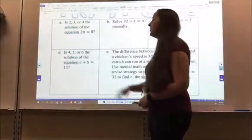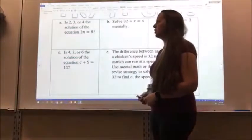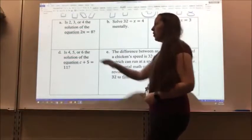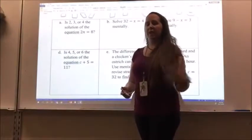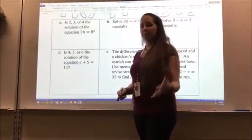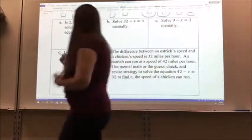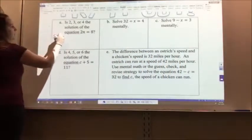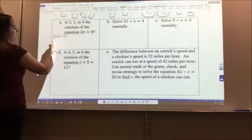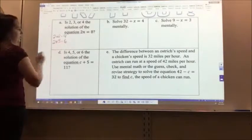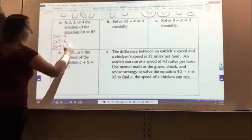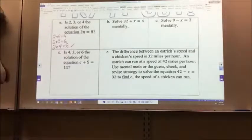So the first one I have is 2, 3, or 4, the solution of the equation 2n equals 8. So I'm actually looking at multiplication here. So I want to think, does 2, 3, or 4 give me 8? So 2 times 2 equals 4. That doesn't give me 8. 2 times 3 equals 6. That doesn't give me 8. 2 times 4 equals 8. So that's my solution. 4 is the solution.